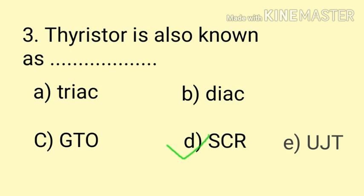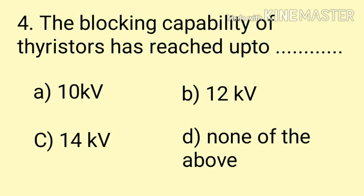Question number four: The blocking capability of thyristor has reached up to __. Option A: 10 kV, Option B: 12 kV, Option C: 14 kV, and Option D: none of the above. Here the correct answer is option B, 12 kV. The blocking capability of thyristor has reached up to 12 kV.